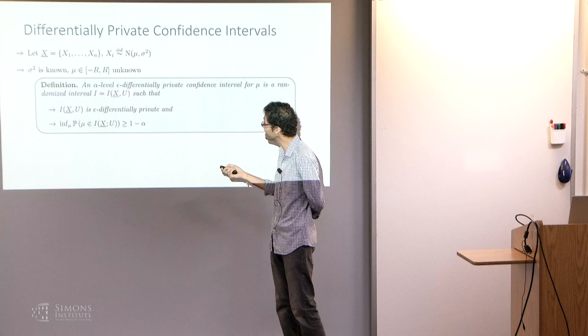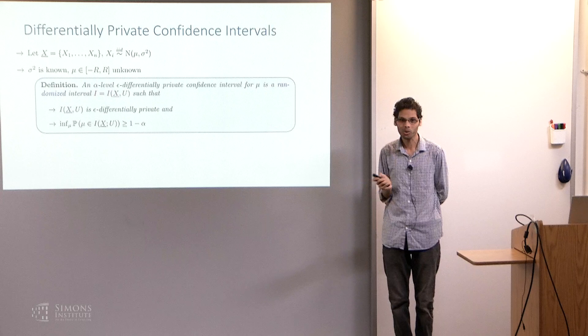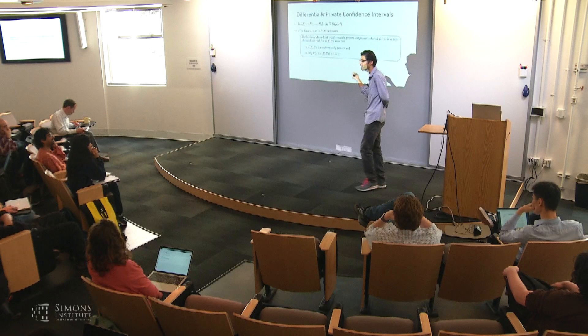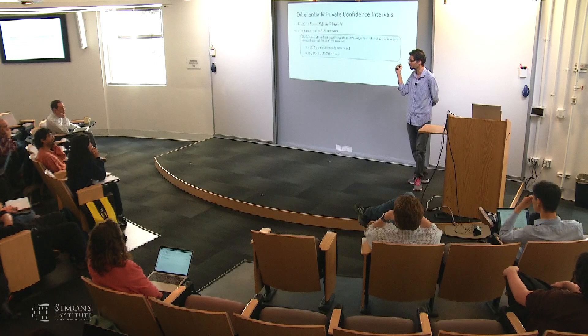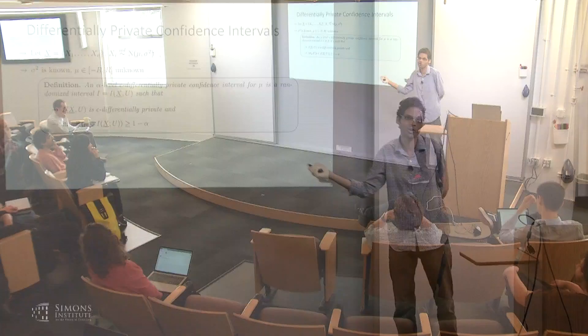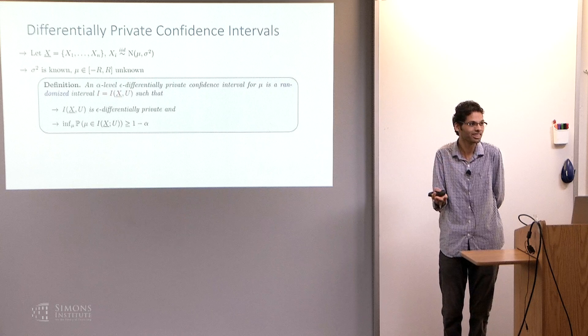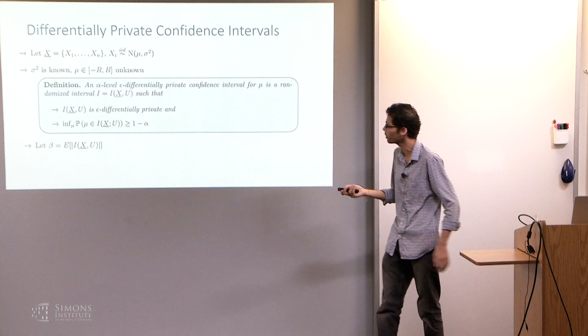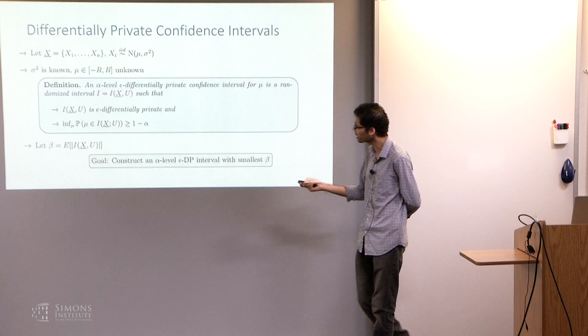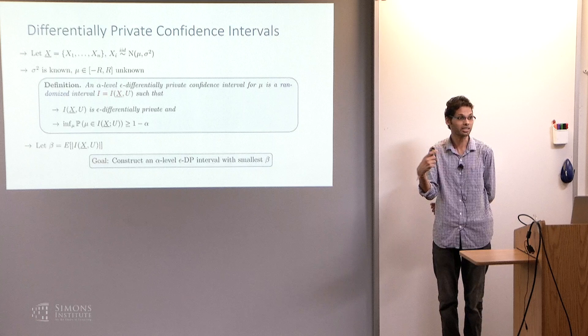This is very easy if I only need those two requirements — someone can tell me the answer: just output [minus R, R]. It's zero differentially private and always gives coverage of 1 minus alpha. So there is an additional requirement: we want the interval to be as informative as possible, meaning as small as possible. Let beta be the expected length of the interval. Our goal is to construct an alpha-level epsilon-differentially-private interval with the smallest possible length so that it's actually informative.